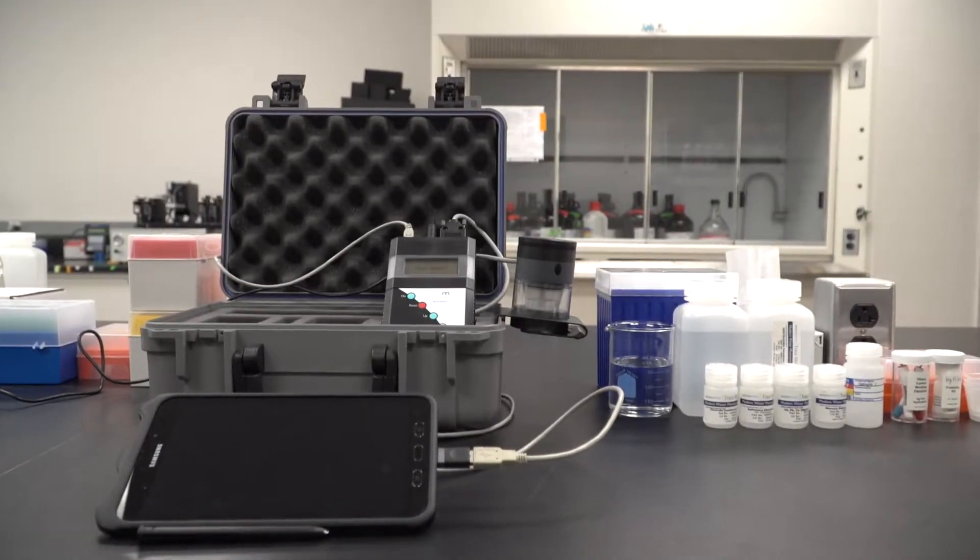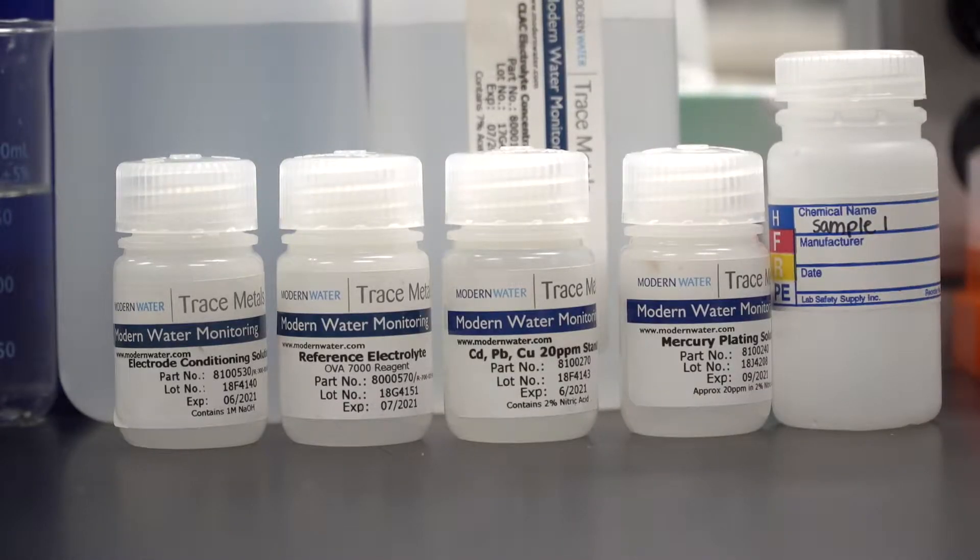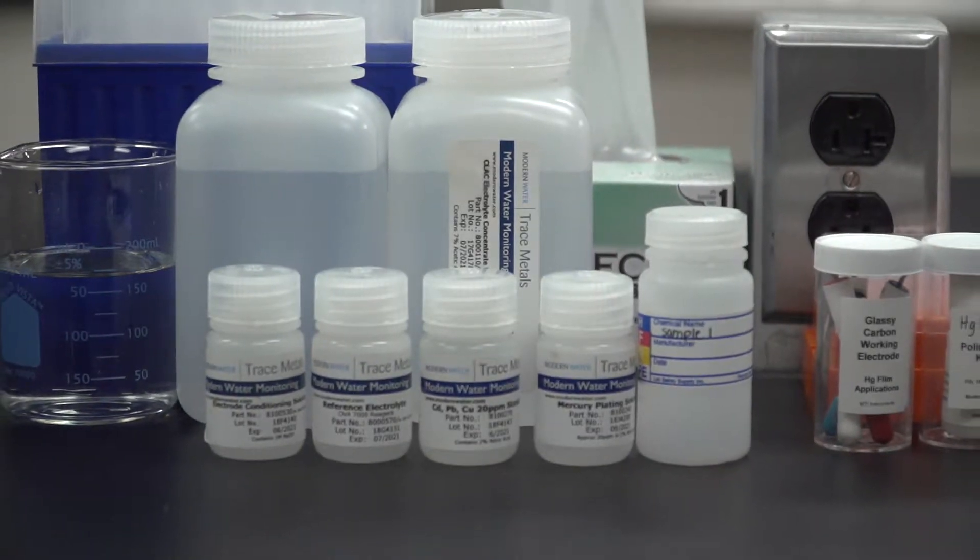The Microtrace PDV is a portable analytical instrument capable of detecting and analyzing over two dozen metals down to low parts per billion or sub parts per billion levels.